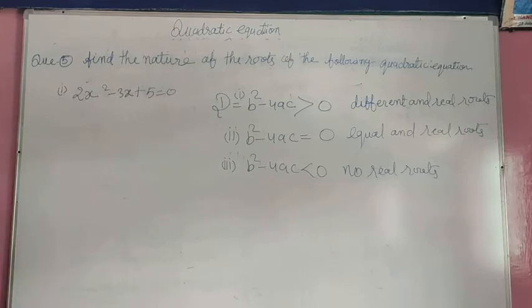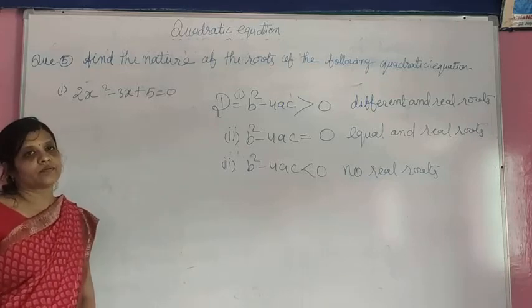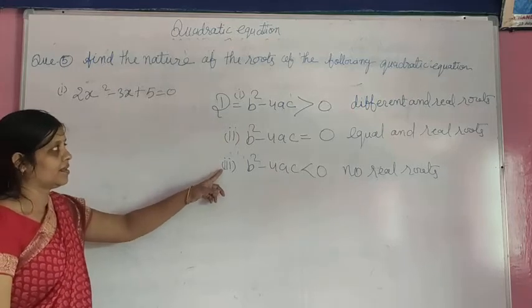Now quadratic equation ka nature find karne ke liye sabse pehle uska discriminant find karna hota hai. Uske liye 3 conditions check karni hoti hai.